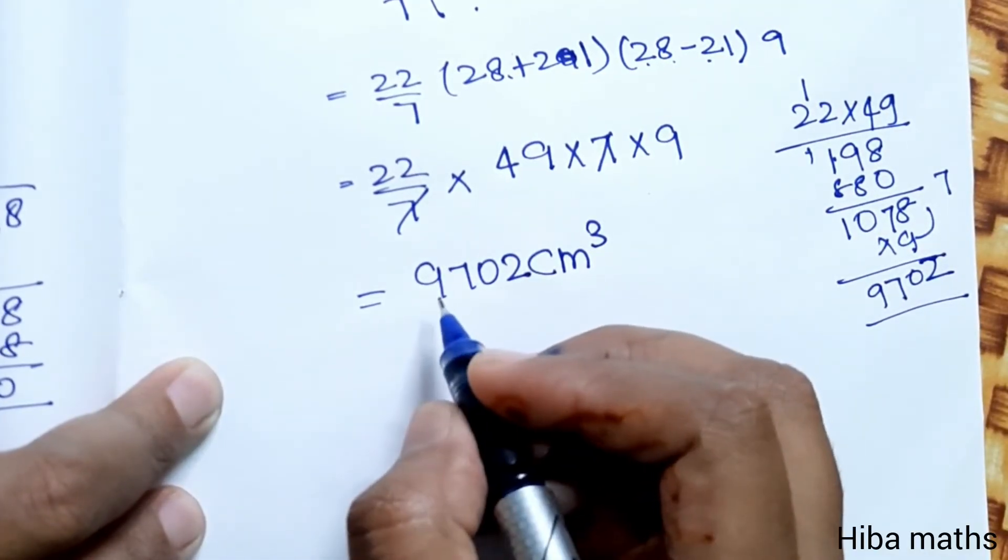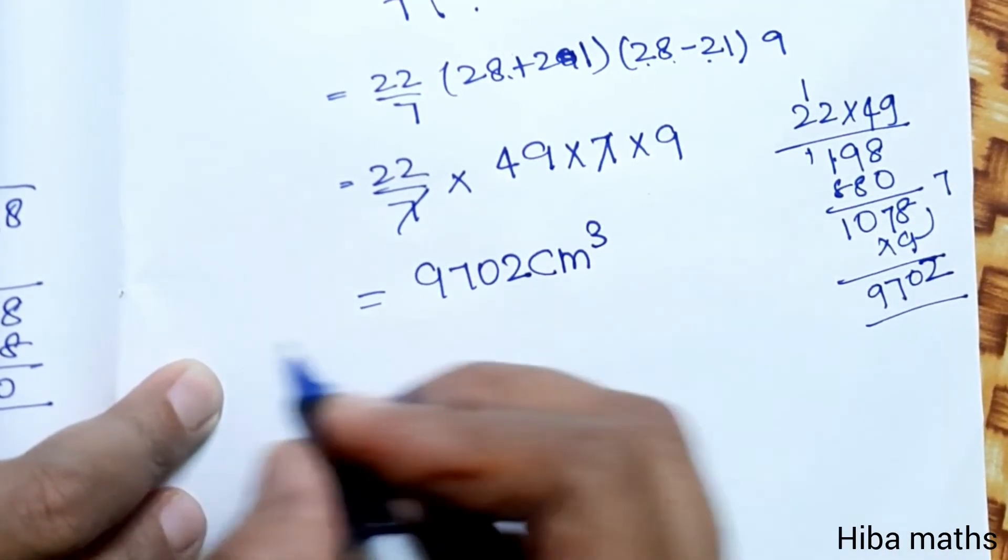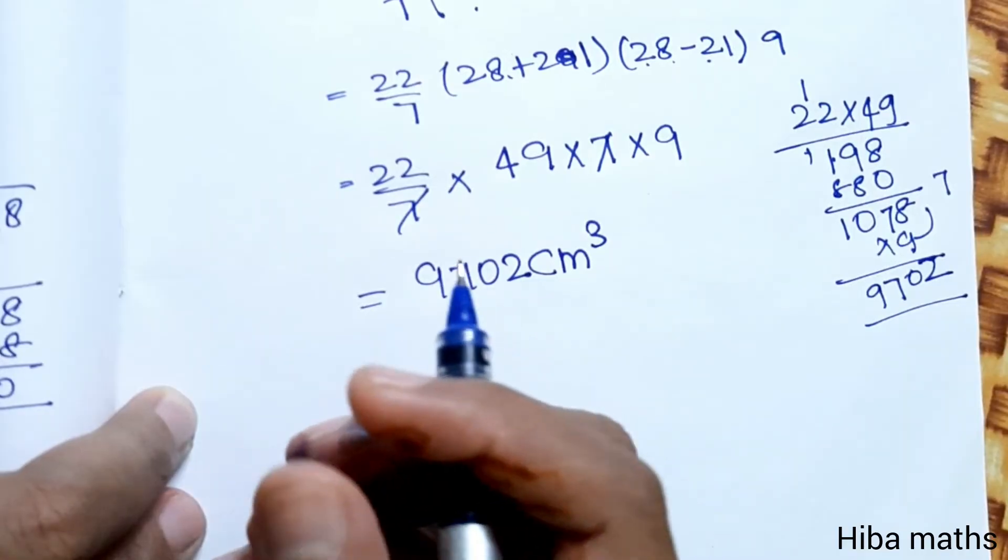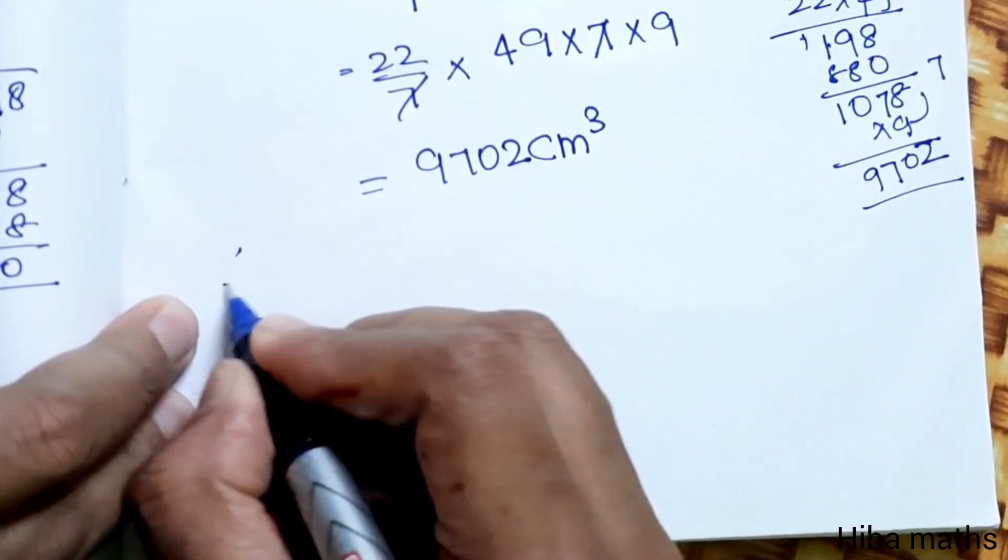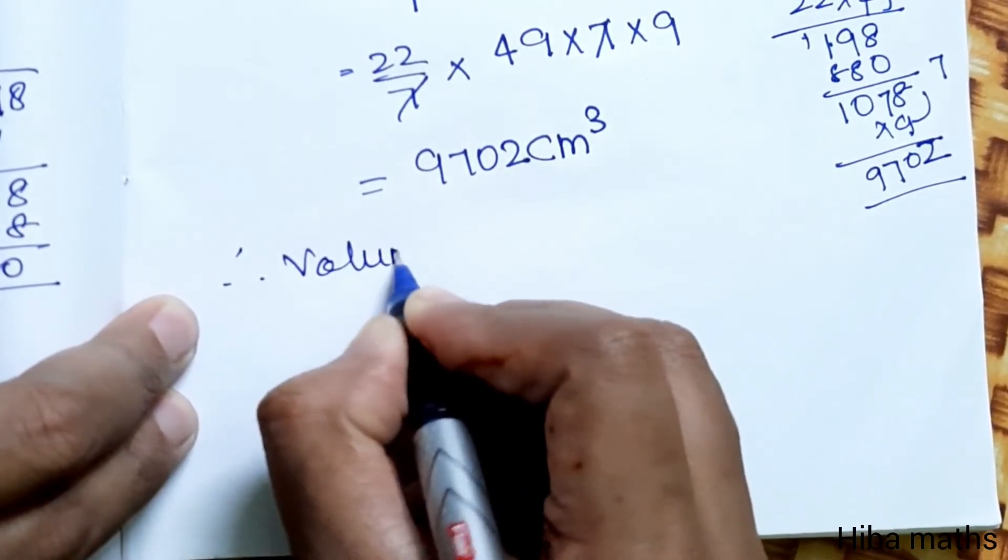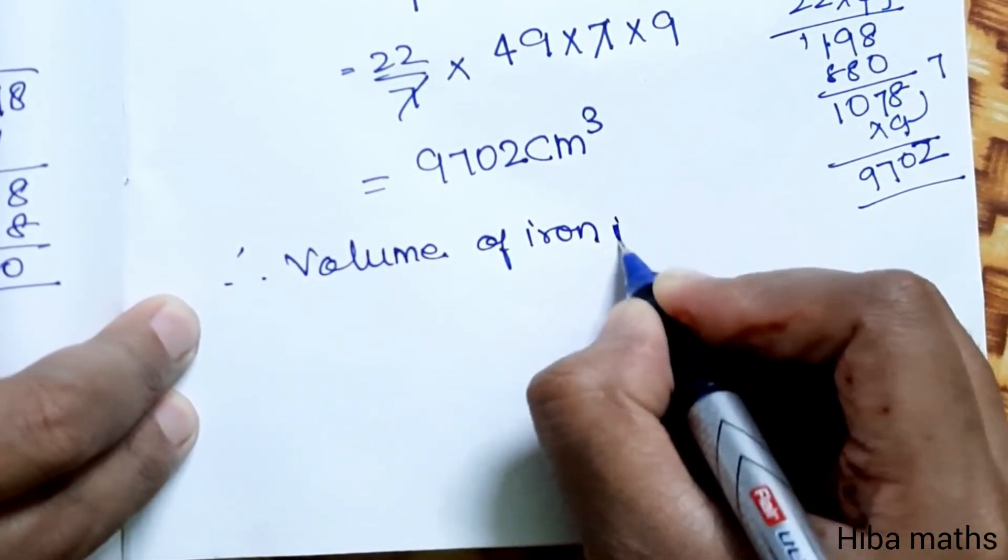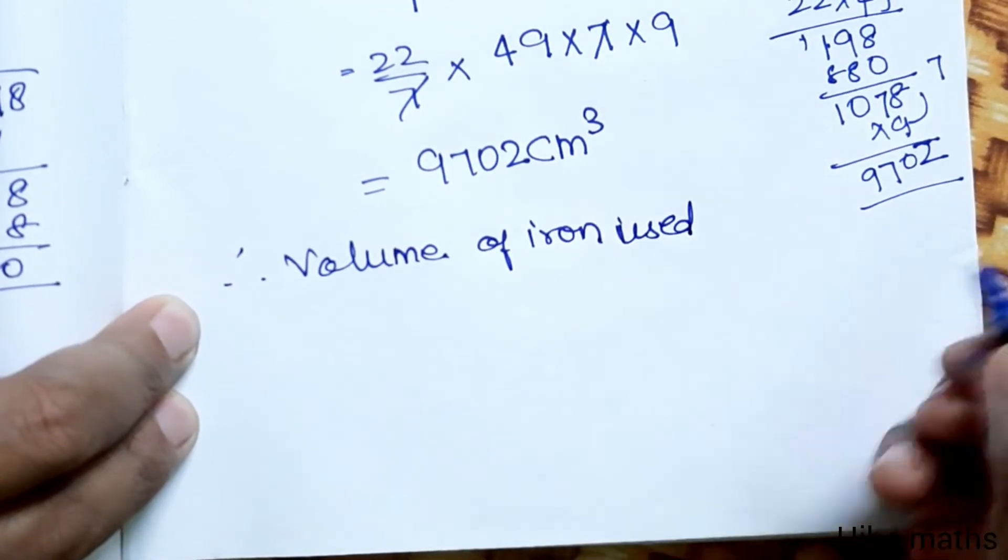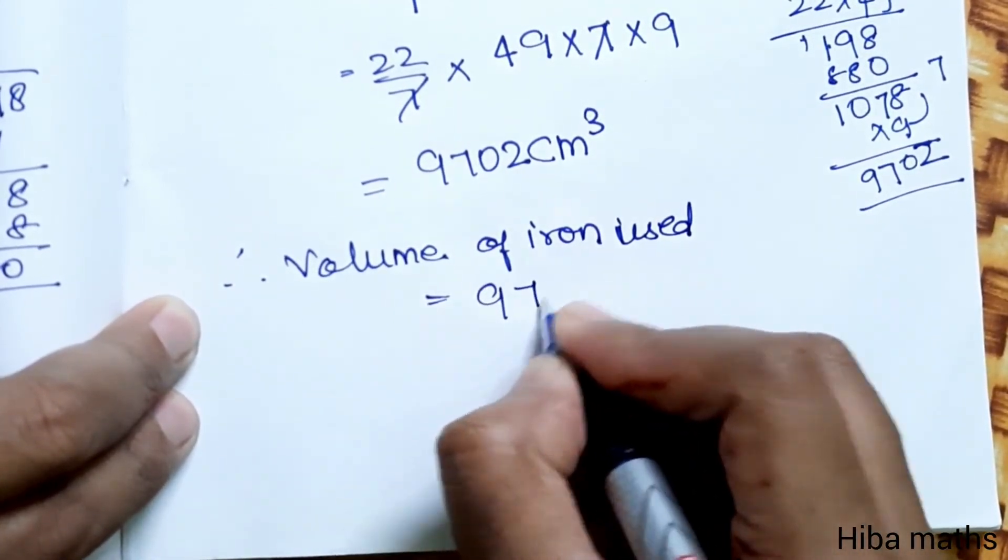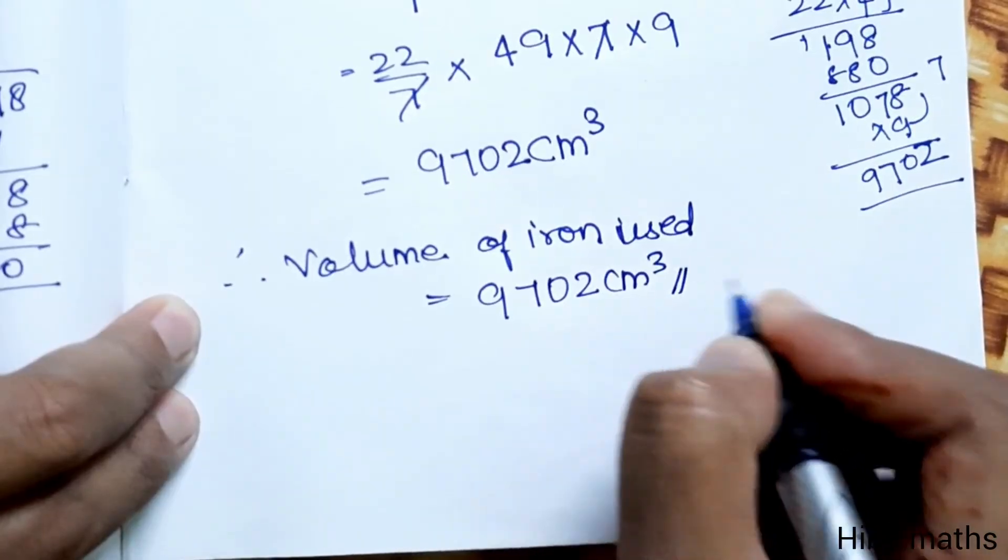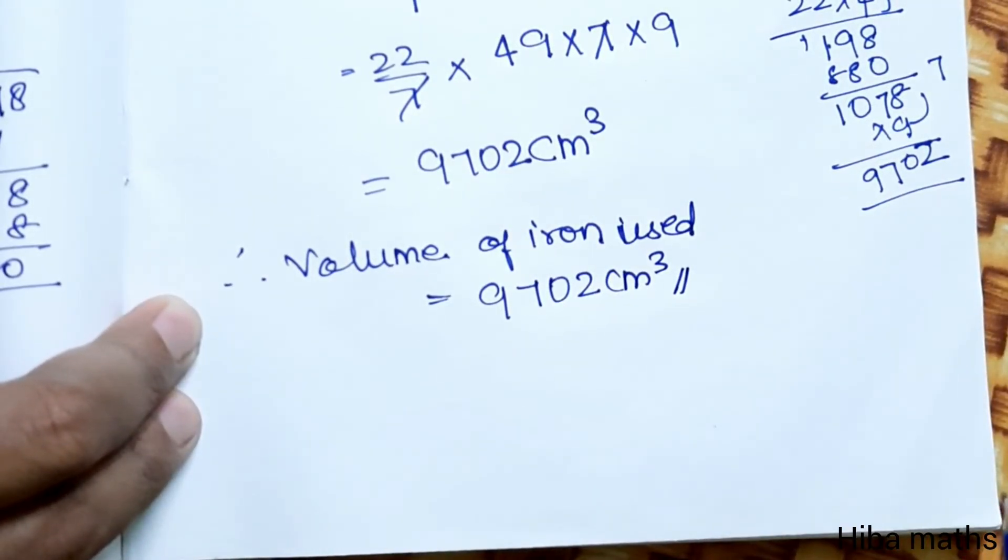The answer is 9702 cm³. This is the volume of iron required. Therefore, volume of iron used is equal to 9702 cm³. Thank you so much for watching.